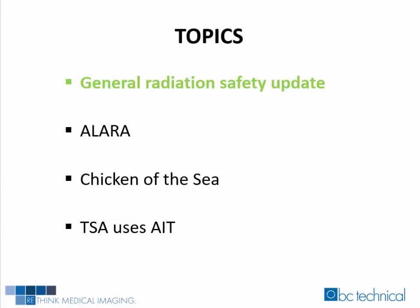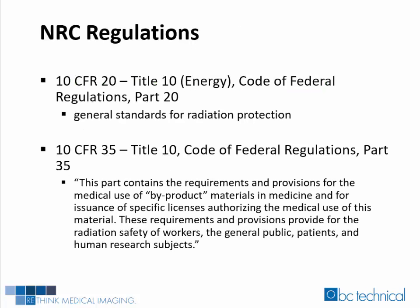Let us begin with a general radiation safety update. All of the regulations that we live and breathe by in nuclear medicine and molecular imaging stem from the Nuclear Regulatory Commission, or NRC. The NRC has two codes in particular that affect our departments. The first is 10 CFR 20, which is Title 10, Energy, Code of Federal Regulations, Part 20. This is where all of the general standards for radiation protection can be found. The document contains, but is not limited to, provisions for radiation protection programs, dose limits for both the public and occupational workers, surveys, and storage of licensed material.